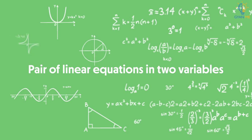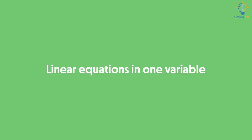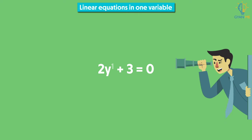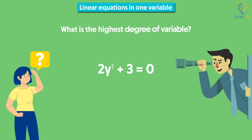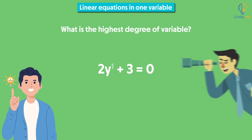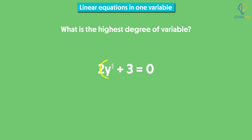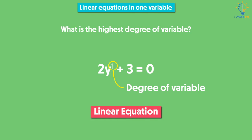In earlier classes, we have already studied linear equations in one variable. For example, 2y plus 3 equal to 0. Observe the equation — what is the highest degree of variable? Recall that degree is the highest exponent of the variable in the given equation. Accordingly, in our equation, degree of variable is 1, and hence it is called a linear equation.